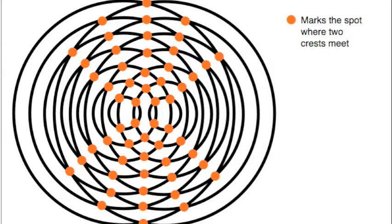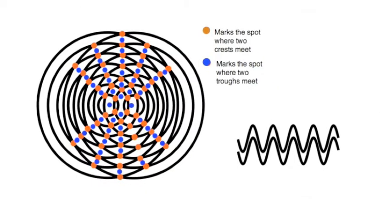The places where the crests meet are marked by these orange dots. The gaps between the lines represent the troughs, and there are places marked here with blue dots, where trough meets trough.